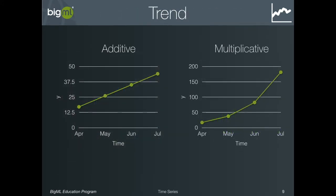Besides this, BigML tries to account for three other factors when fitting a time series model. The first is the overall trend in the data — that is, whether the values are getting lower or higher in general as time goes on. The trend can be either additive, meaning that the values are going up by a constant amount at each time step, or multiplicative, meaning that the values are going up by an amount that is growing geometrically.